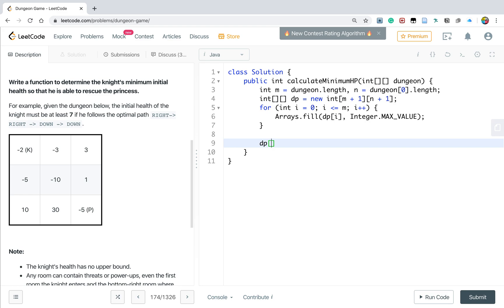So we just fill all the value to dp[i] to the integer max value. But we have two cells, which is the dp[n][n-1], equal to 1. And the dp[n-1][n] equal to 1.